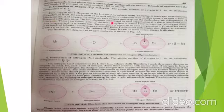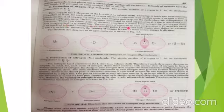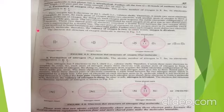By doing so, each oxygen atom acquires a stable electronic configuration of the nearest noble gas, that is neon. The two electrons contributed by each oxygen atom give rise to two shared pairs of electrons, and these two shared pairs of electrons constitute a double bond between the two oxygen atoms, represented by a double line. The two pairs of electrons on each oxygen atom in O2 that are not involved in bond formation are called lone pairs. Since each oxygen atom shares two electrons, the valency of oxygen is two.